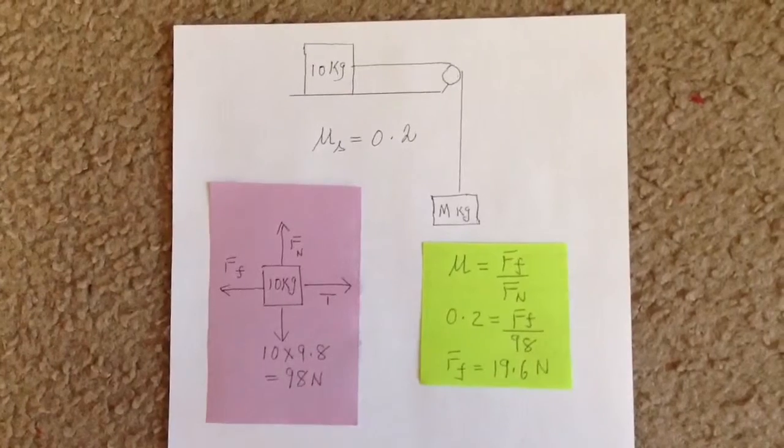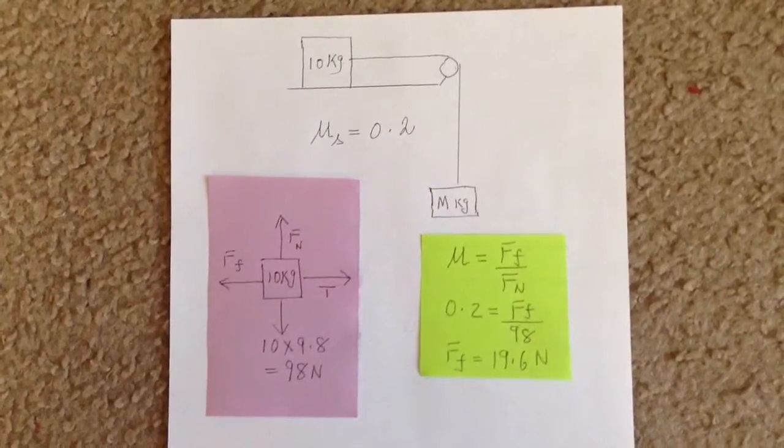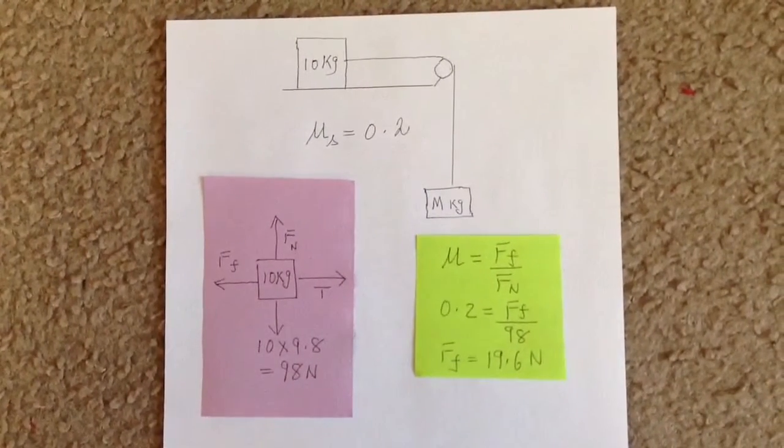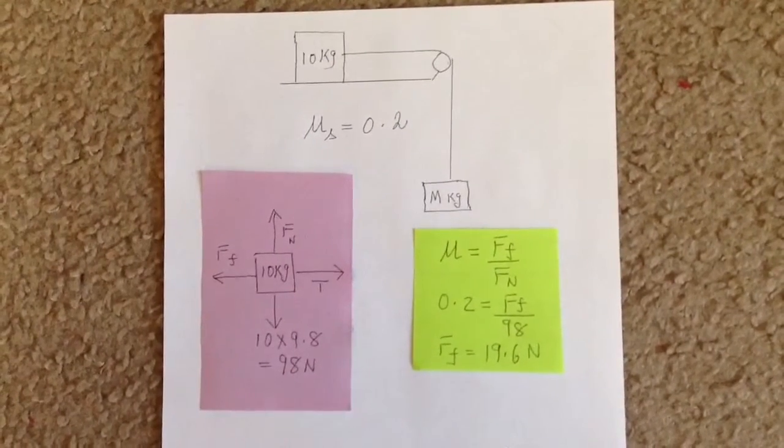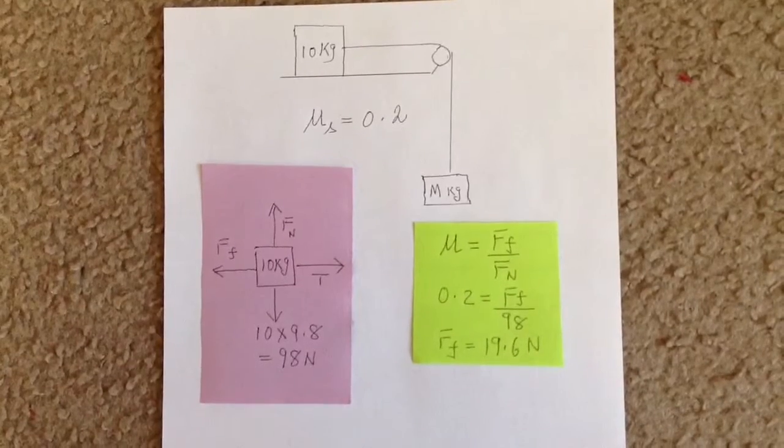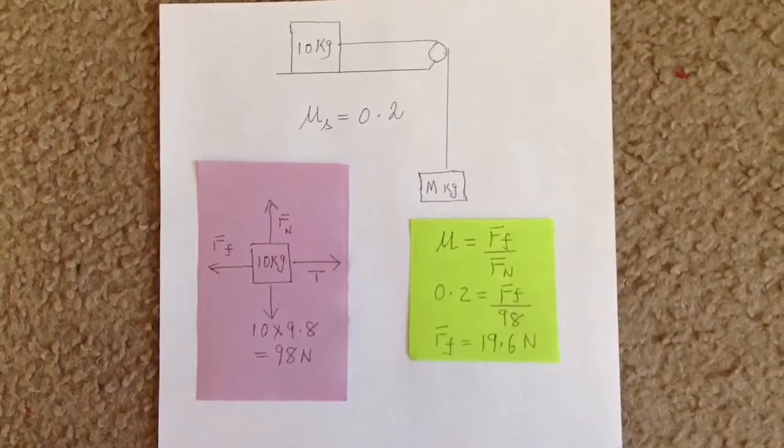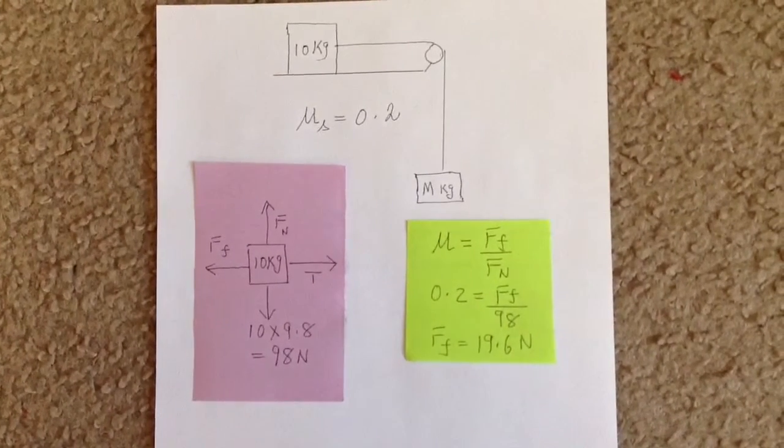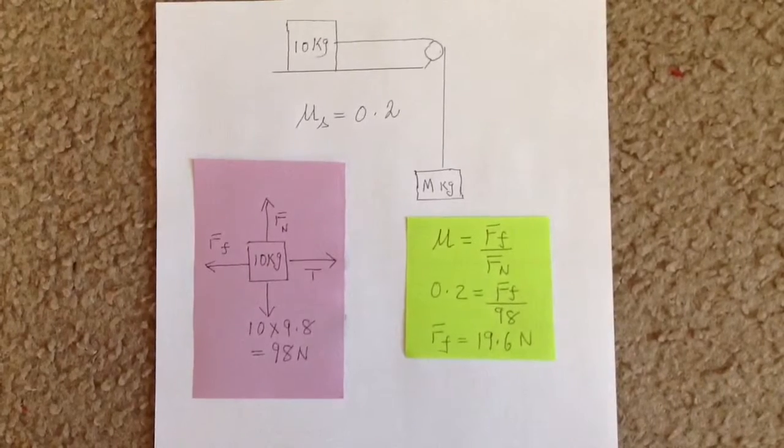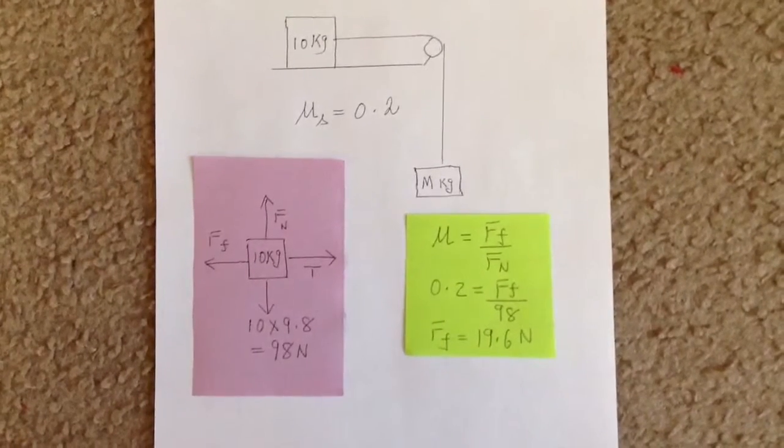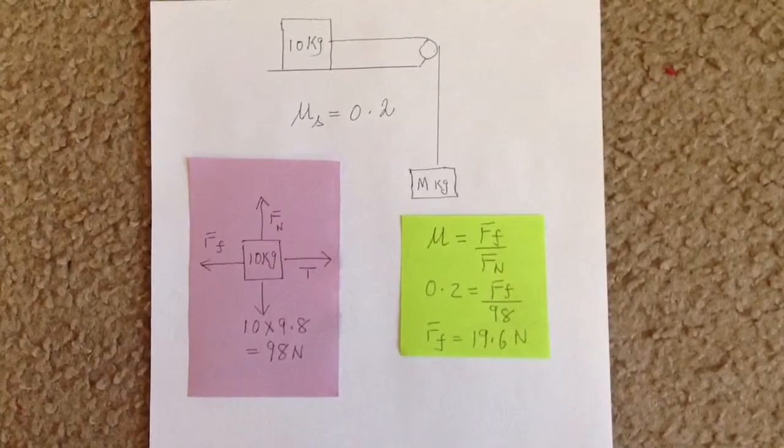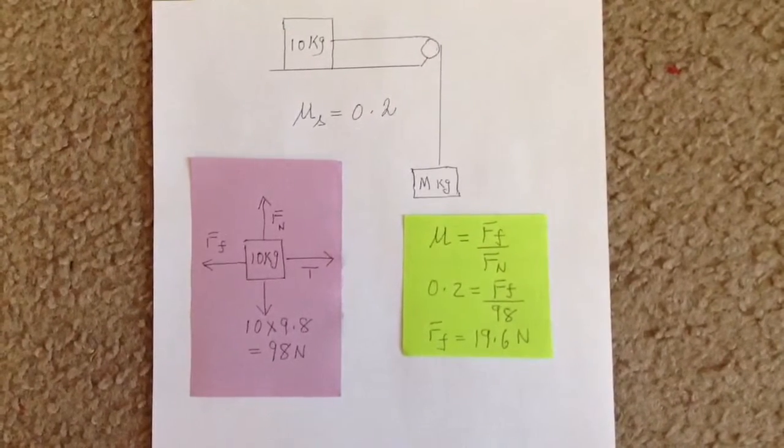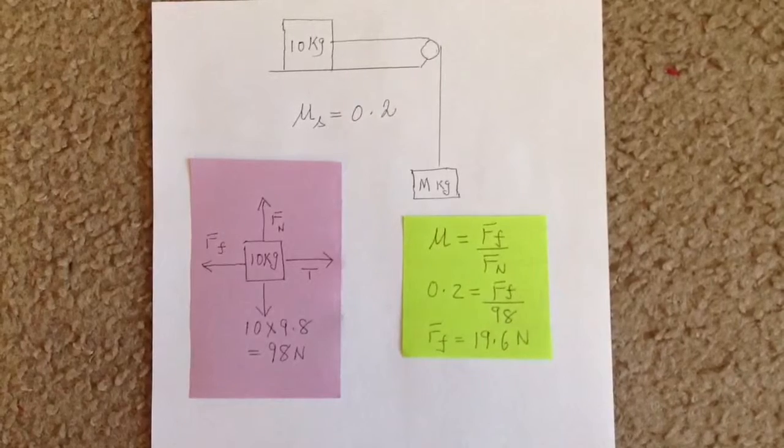The coefficient of static friction is given to be 0.2. By definition, this is the force of friction divided by the normal force. Therefore, 0.2 equals the force of friction divided by 98, which gives the force of friction to be 19.6 newtons.